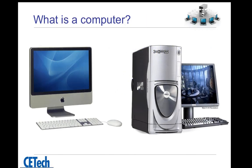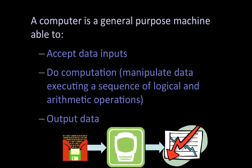Going back to our original question — what is a computer? Based on what we have discussed, a computer is a general-purpose machine that can accept some data as input, perform some computation — that is, manipulate data — execute a sequence of well-defined logic and arithmetic instructions, and finally produce some output.